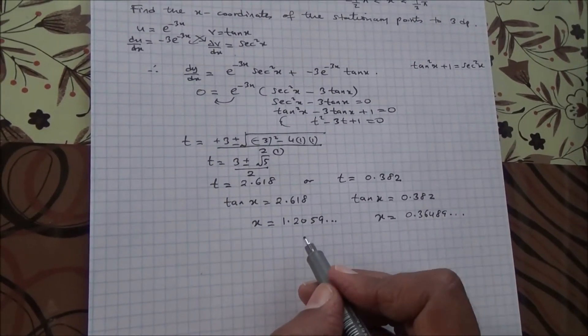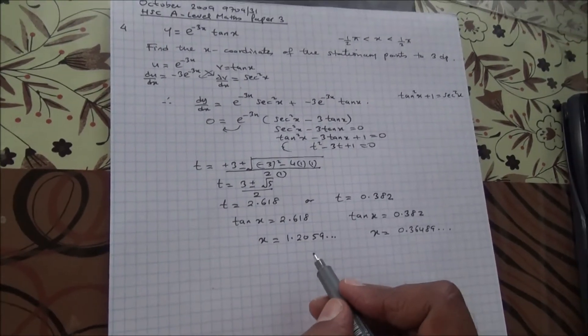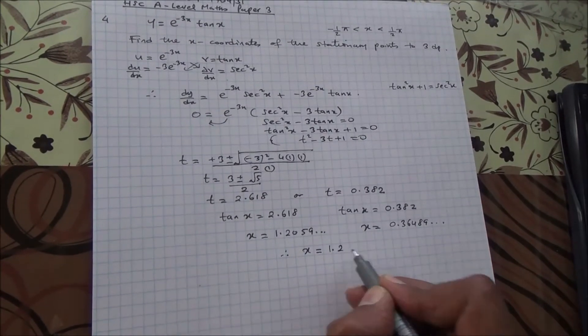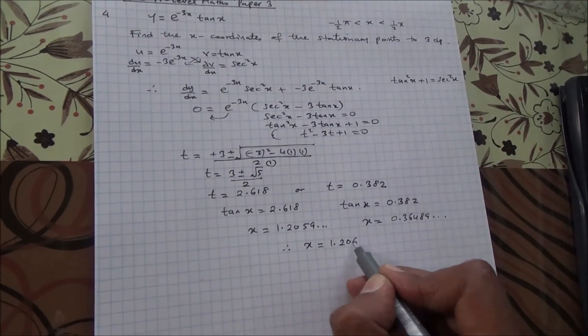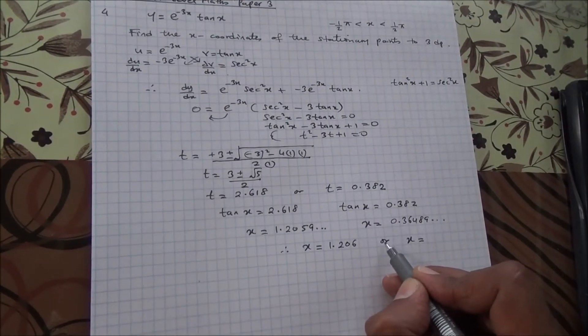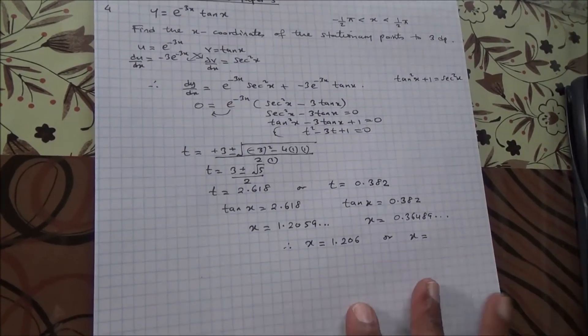We need to give our answer to 3 decimal places. Therefore, the x coordinates is going to be of the stationary points, 1.206, or x, not necessarily or, it can be and, because we have 2 coordinates.